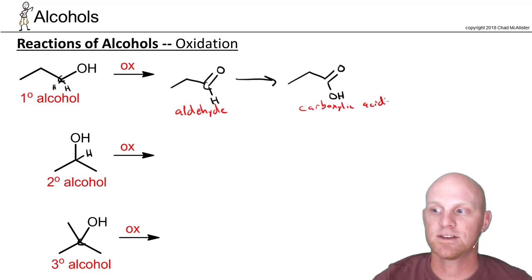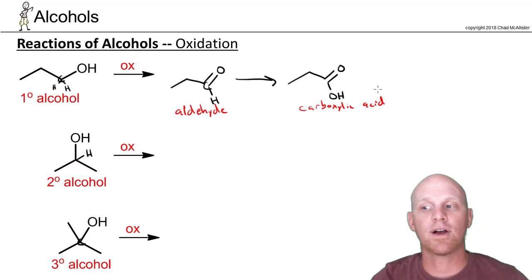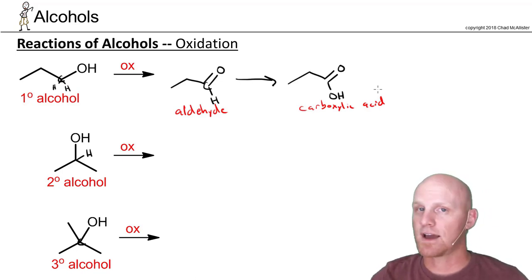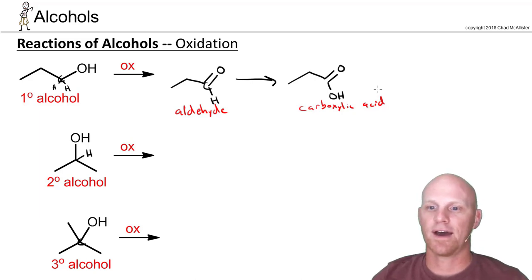This is a big deal because we have a reagent for either case. If I want my primary alcohol to turn into a carboxylic acid — two steps of oxidation — I can do that. If I want it to only convert to an aldehyde, I have a different reagent and I can do that.